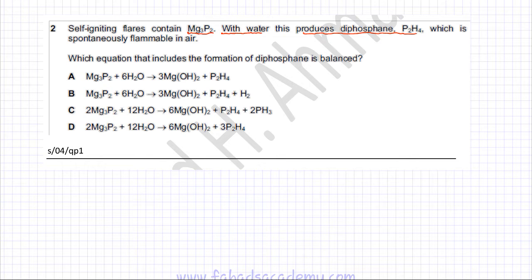Nothing else is given, so I'm first going to figure out which of the equations are correct. The question asks which equation that includes the formation of diphosphate is balanced. Each equation has Mg3P2 reacting with water, producing P2H4. We don't know what the rest of the products are, whether it's magnesium hydroxide, hydrogen, or phosphine. Since the question is about which equation is balanced, I'm just going to figure out which equations are balanced.